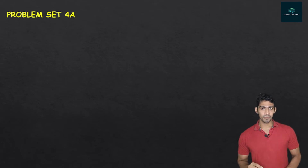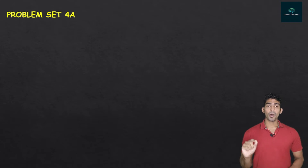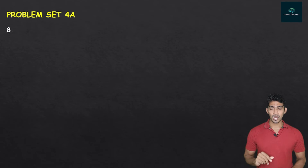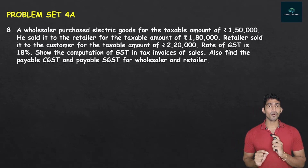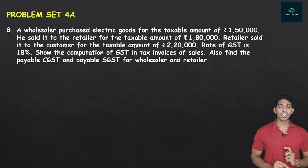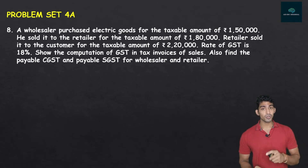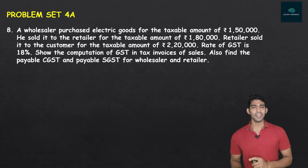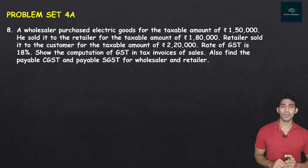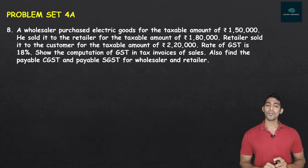We'll do Problem Set 4A now, since all Practice Set questions are almost done. Problem Set 4A, Question 8: A wholesaler purchased electric goods for a taxable amount of Rs. 1,50,000. He sold it to the retailer for a taxable amount of Rs. 1,80,000. The retailer sold it to the customer for a taxable amount of Rs. 2,20,000. Rate of GST is 18%. Show the computation of GST in tax invoices of sales. Also find the payable CGST and SGST for wholesaler and retailer.